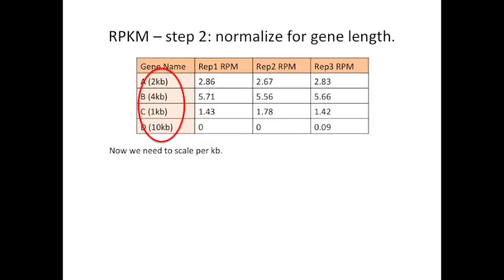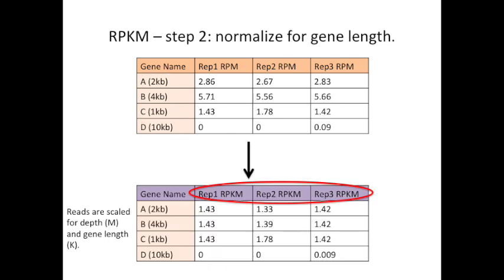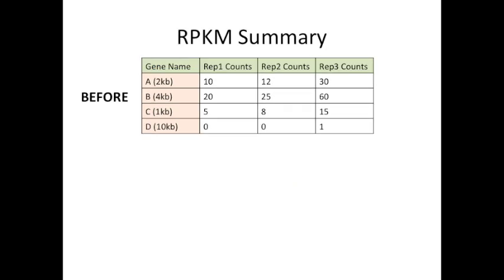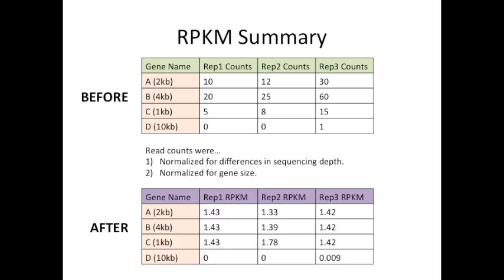The second step for normalizing by RPKM is to normalize for gene length. Here we've got the gene lengths on the left side. All we have to do now is scale per kilobase. After dividing by the length of the genes, the reads are scaled for depth (M) and for gene length (K), so now we have RPKM. To summarize: we started with data not normalized for depth or gene length, then we normalized for differences in sequencing depth and differences in gene size. Here's our after data — our RPKM values for each replicate and each gene.